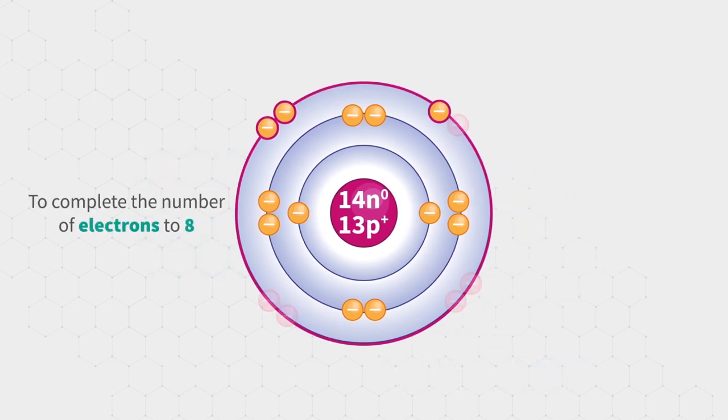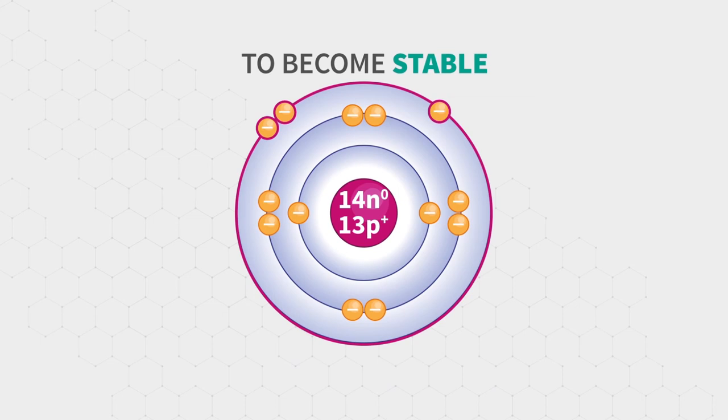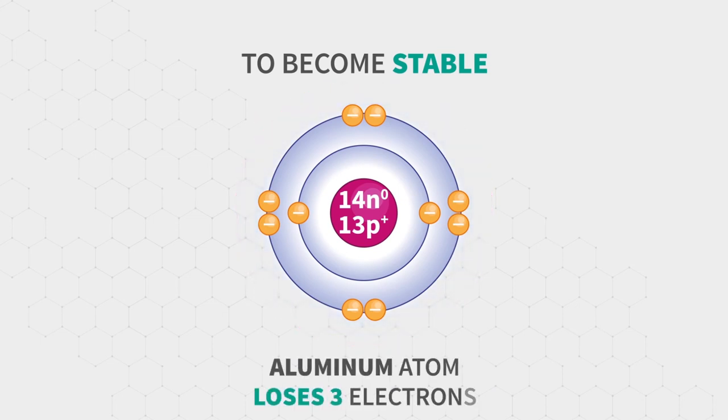To complete the number of electrons to eight, it would need to gain five more electrons. This is impossible because there is a maximum number of electrons that an atom can gain. Instead, to become stable, aluminum tends to lose the three electrons from its outermost shell.